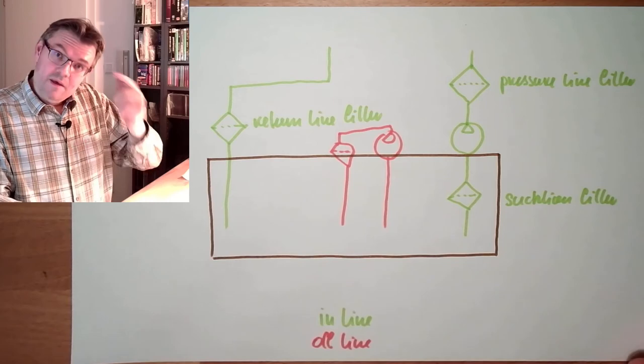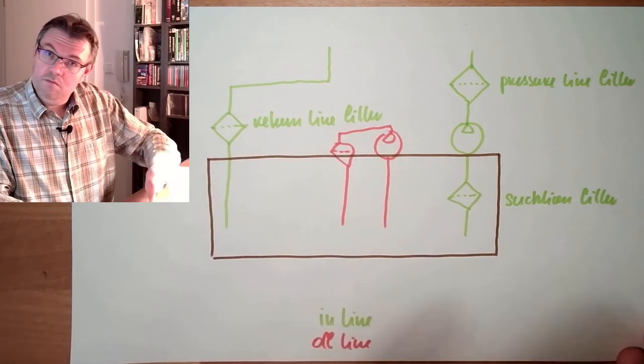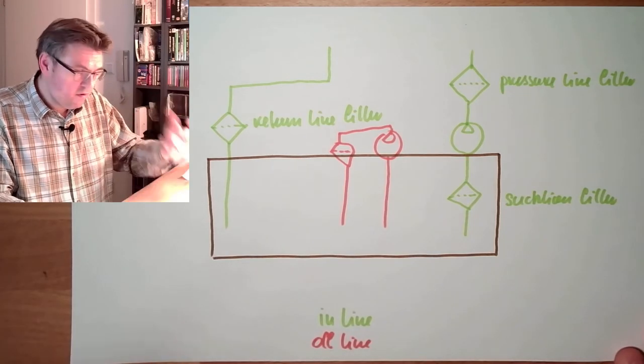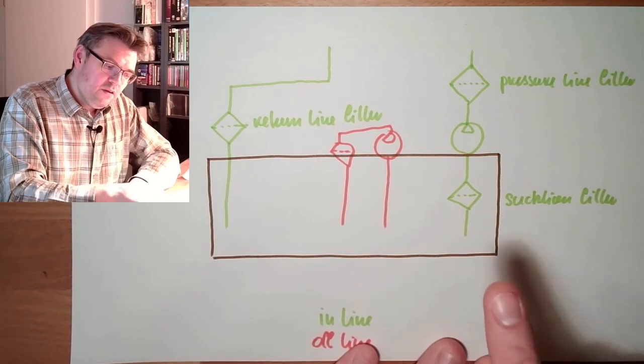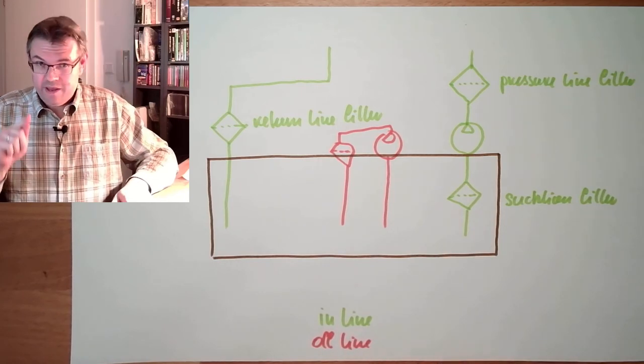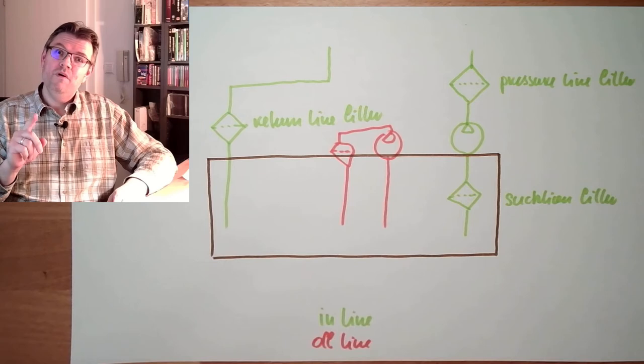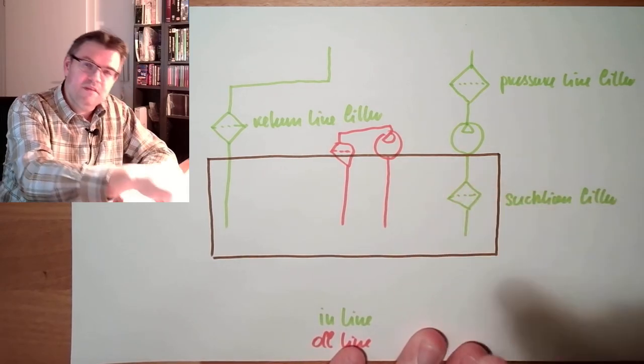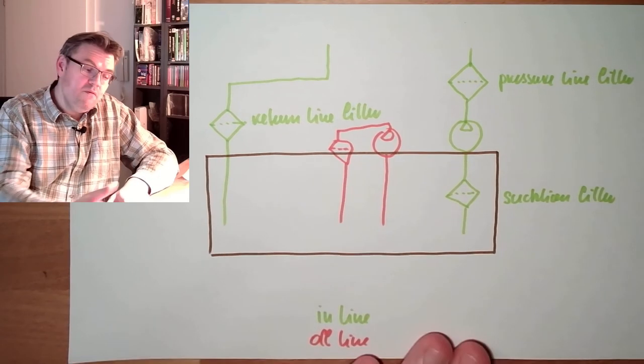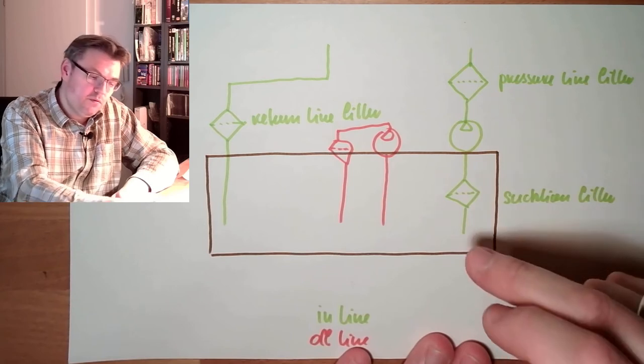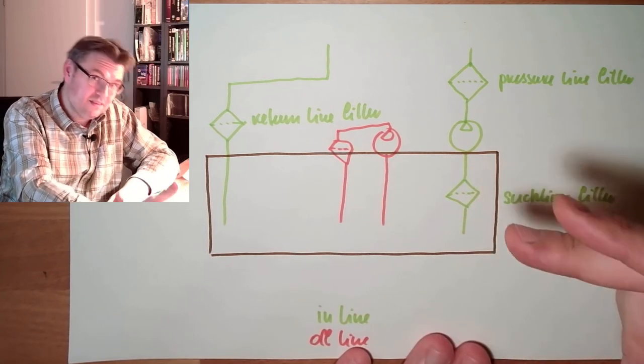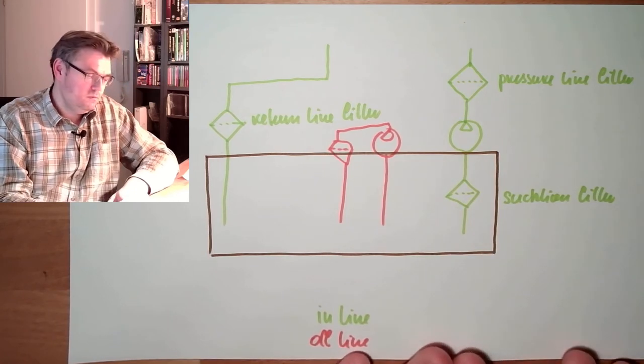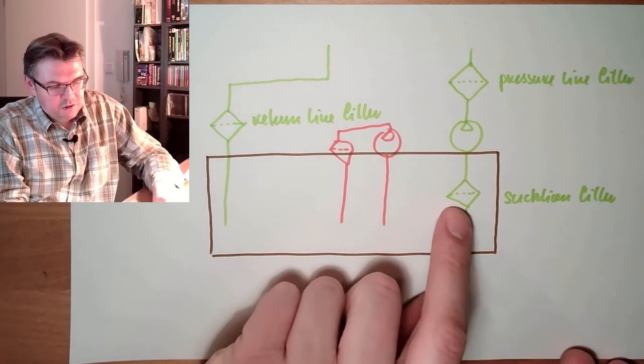Suction line filter, it would be good because I also protect the pump from any harm, from any chips or whatever. However, usually in the pump line, I already have issues with cavitation because the pressure is dropping. Now I'm building in an additional filter. The pressure is dropping even more because I have a delta P between the pressure side and the other side. The thing before the filter is even lower in pressure. That's the disadvantage of the suction line filter.